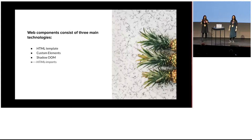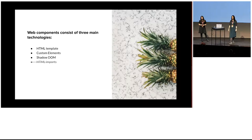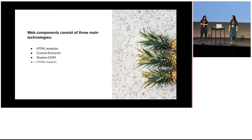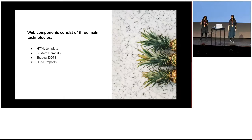Web components consist of three simple technologies: HTML template, Custom Elements, and Shadow DOM. HTML imports used to be one of them, but with ES6 modules you really don't need them. The Polymer team is also working on HTML modules. If you've ever seen any article that refers to HTML imports, that's a sign the article might be a little bit outdated.